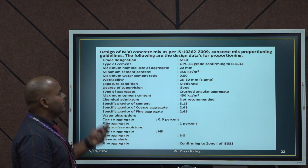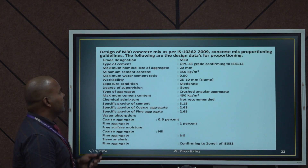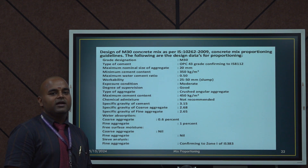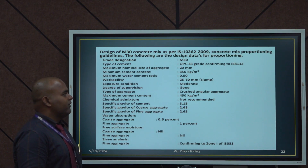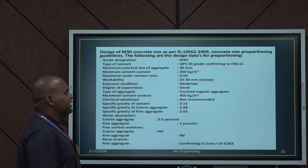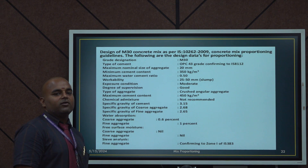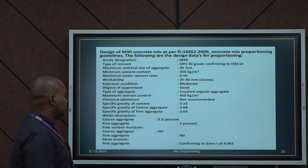Now let me explain these steps with an example. The data required before moving to the mix design: grade designation is M30, type of cement is OPC 43 grade conforming to IS 8112, minimum cement content is 350 kg per metre cube, maximum water cement ratio is 0.5, workability is 20 to 50 mm slump, exposure condition is moderate, degree of supervision is good, type of aggregate is crushed angular aggregate, and maximum cement content is 450 kg per metre cube. Chemical admixture is not recommended since the grade is below M40.